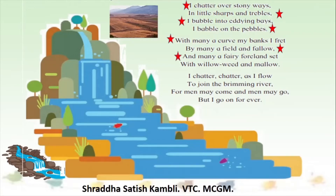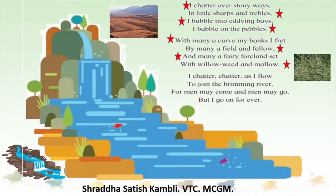'With many a curve my banks I fret, by many a field and fallow.' Field and fallow means open farmlands, so the brook also goes through fields. 'And many a fairy foal and set with willow, weed and mallow.' These are beautiful small plants which can also be called weeds — unnecessary but beautiful. 'I chatter, chatter as I flow' — I make a lot of sound when I flow, I do not flow silently. 'To join the brimming river. For men may come and men may go, but I go on forever.'